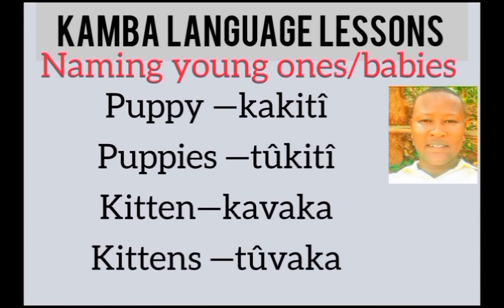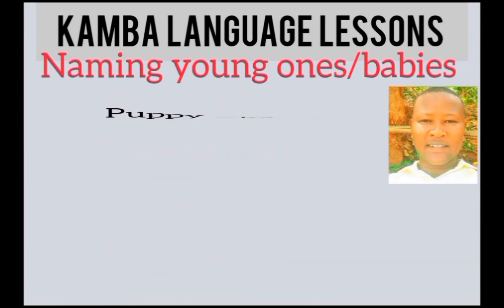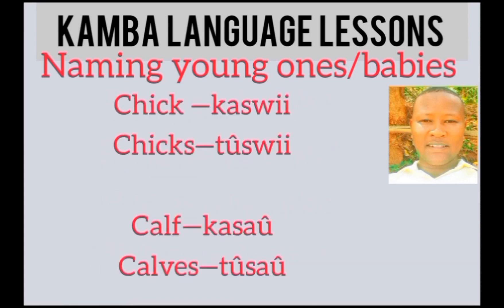Puppy is ka kite. Kitten is ka vaka. Kittens is to vaka. Chick is ka swi, chicks is to swi. Calf is ka saw.